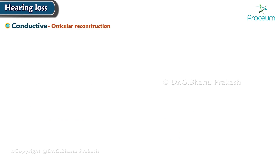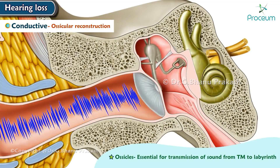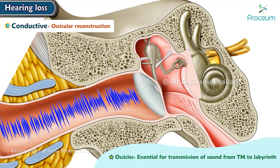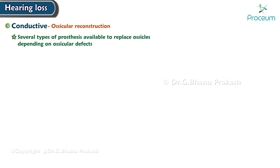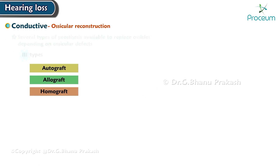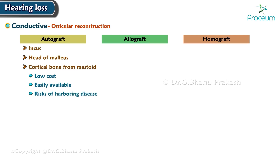Ossicular reconstruction: ossicles are essential for the transmission of sound from the tympanic membrane to the labyrinth. Several types of prostheses are available to replace ossicles depending on the ossicular defects. The three types are autograft, allograft, and homograft. Autograft materials include the incus, head of the malleus, and cortical bone of the mastoid. They are low cost and easily available, but carry a risk of harboring disease; they can be sculptured to bridge the gap.